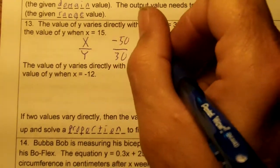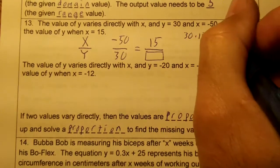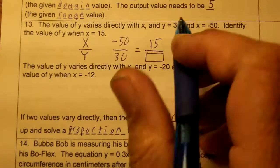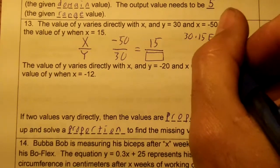On your calculator, you would punch 30 times 15. You would hit enter, and then you would hit divide by negative 50. And you would get what? Negative 9.